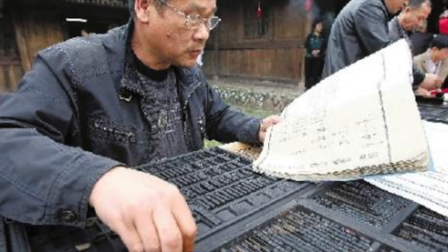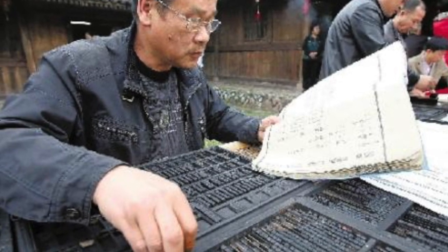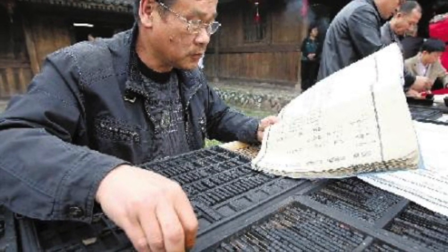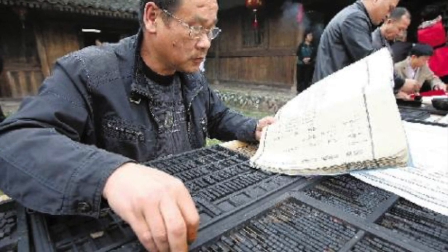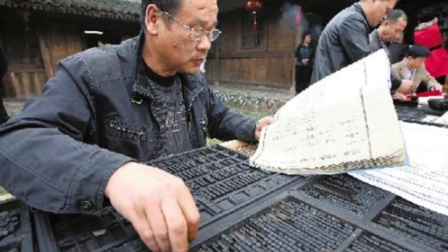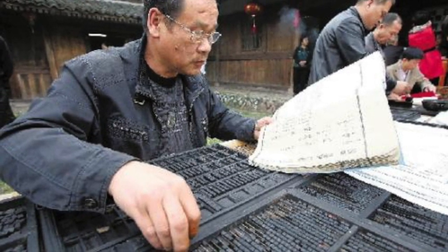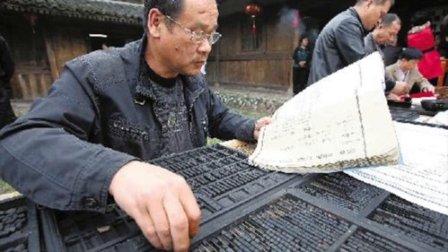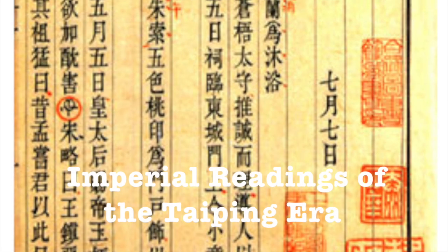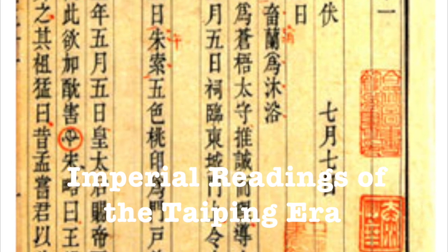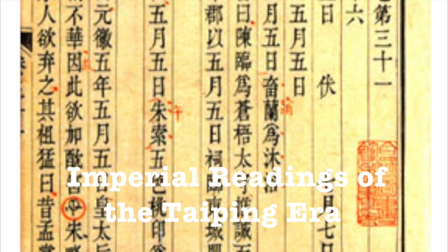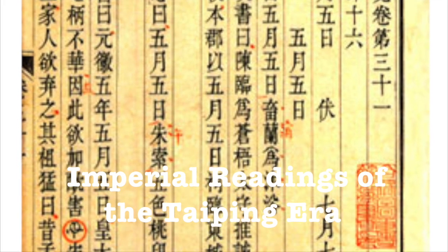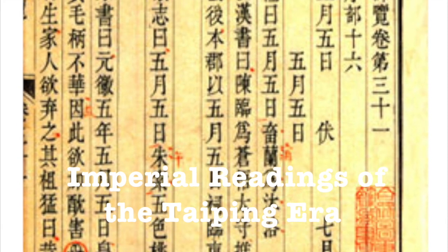Materials found in China indicate the invention of bronze movable type printing around the 12th century. During the Ming Dynasty, Hua Sui in 1490 used bronze type to print books. In 1574, the 1000-volume encyclopedia called Imperial Readings of the Taiping Era was also printed with bronze movable type.